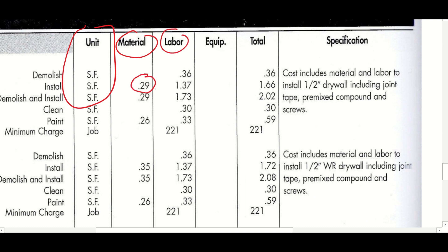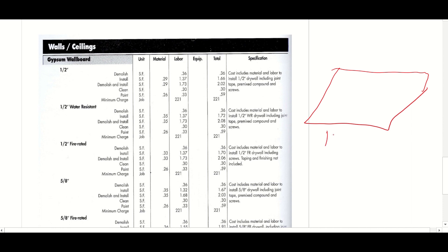So drywall, 29 cents for material, $1.37 for labor. So this is a very labor-intensive trade. Most of your work's going towards people and not towards material. Drywall material is exceptionally cheap compared to others.